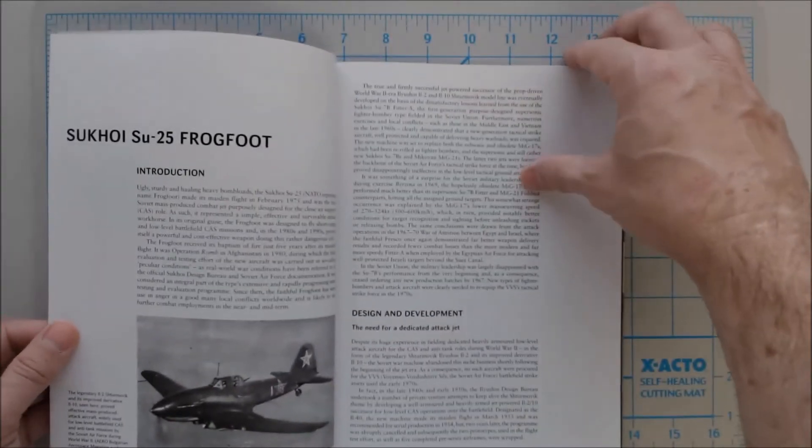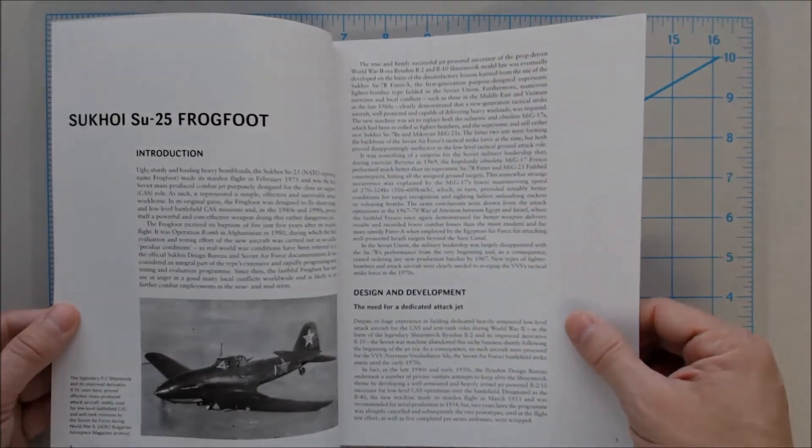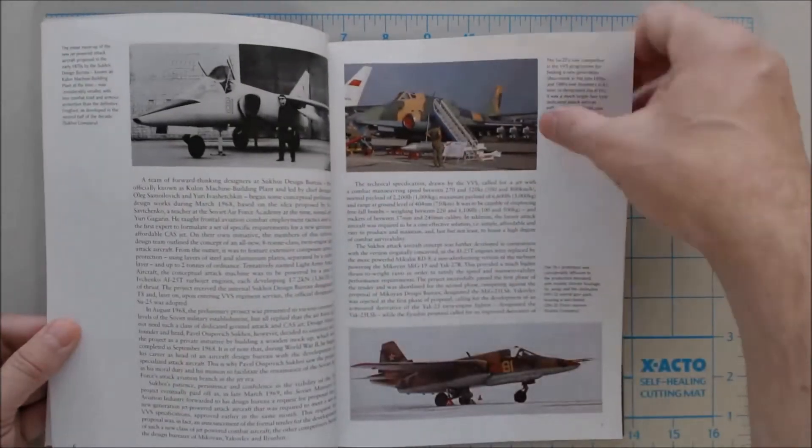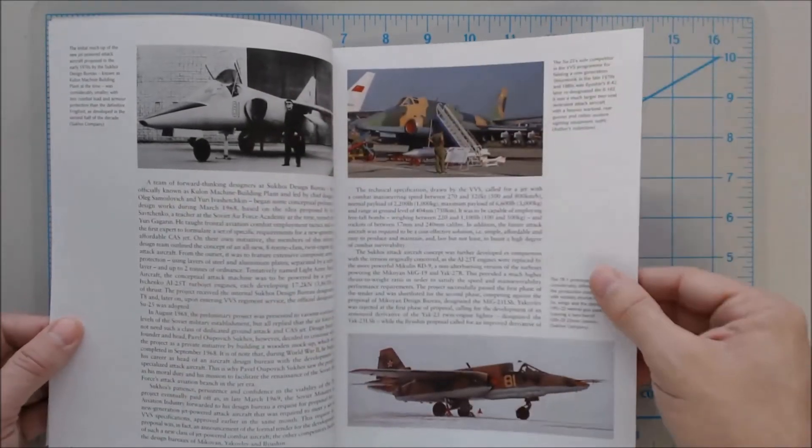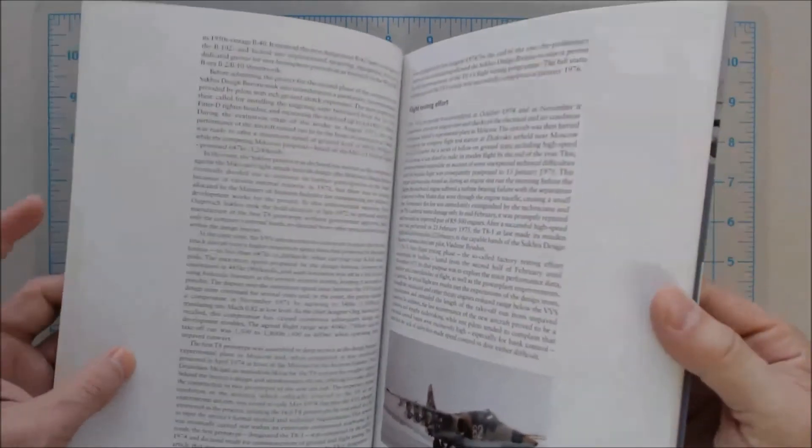And then, you can see here, they've got some really early photo of the Sturmovic, and moving on, they've got more photos of essentially the whole design and development of this line of aircraft leading up to the SU-25.